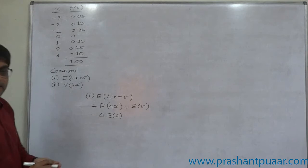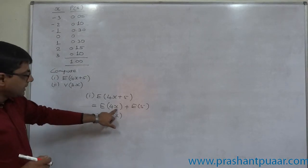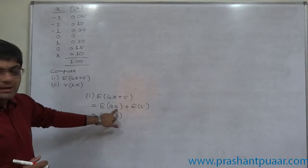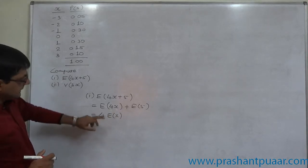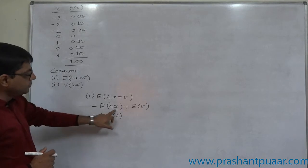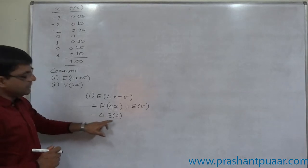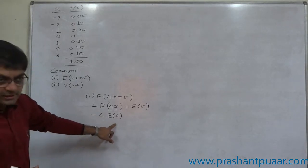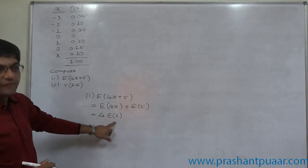The property of expected value is, if the values of random variable are multiplied by any constant number, then the expected value of this new random variable after multiplication is nothing, it is constant number times the expected value of original random variable. So E of 4x is 4E of x.